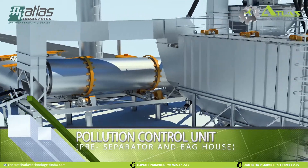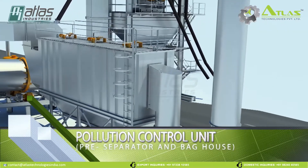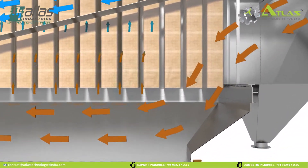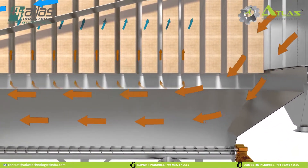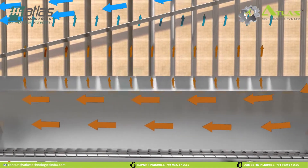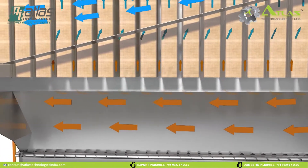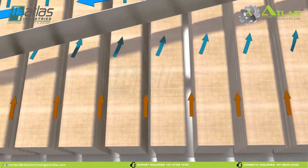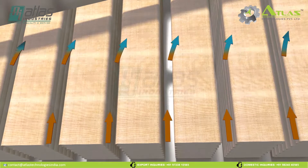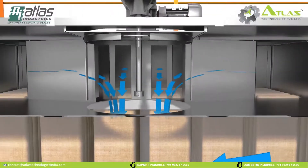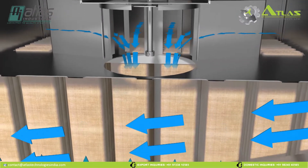Pollution Control Unit. The air along with dust particles enters into the pollution control unit. The heavy particles are separated from air in the pre-separator area. Then it is allowed to pass through a series of bags with the help of an induced draft system. Fine dust particles will get accumulated on the bag and clean air will pass through the bags and be released into the atmosphere.